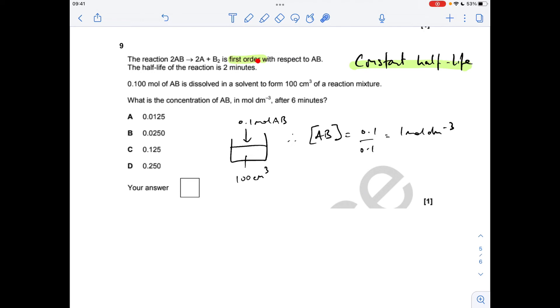Number 9. So you can see I've highlighted the fact that it's first order with respect to AB. That means there's a constant half-life. Got my little diagram there. So we've got 0.1 moles of AB and 100 cm cubed of water. So we need to work out the concentration of AB. Because they want to know what the concentration is going to be after 6 minutes. So moles over volume. Remember, volume's got to be in decimeters cubed. So the starting concentration of AB is 1 mole per decimeter cubed. So 6 minutes is 3 half-lives. So after the first half-life, it'll halve to 0.5 moles per decimeter cubed. After the next half-life, so that's 4 minutes have passed now, it's down to 0.25 moles per decimeter cubed. Another 2 minutes. So there's your 6 minutes mark. 0.125. And so the answer was C.